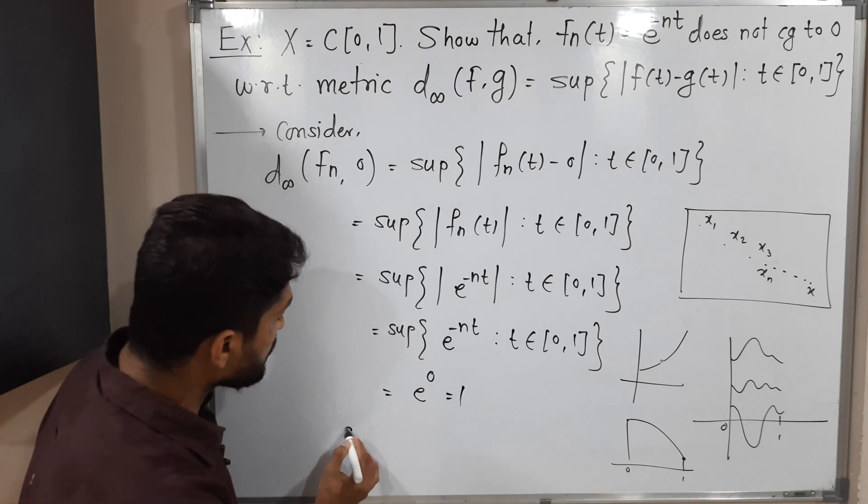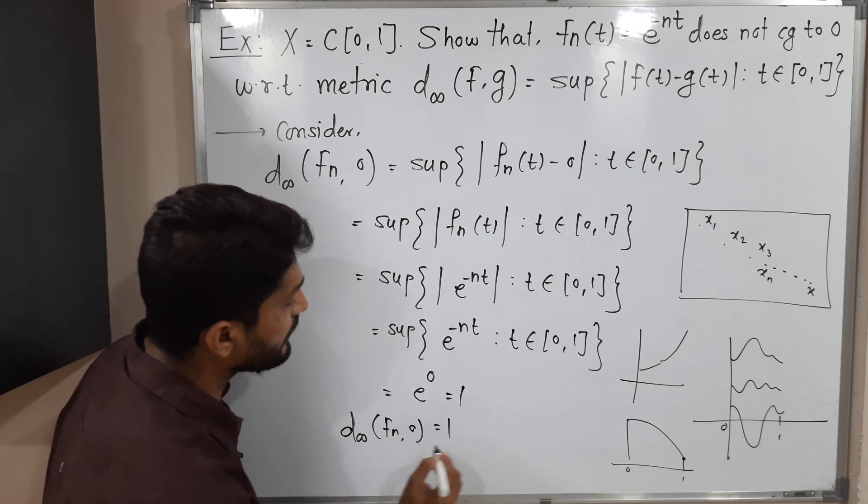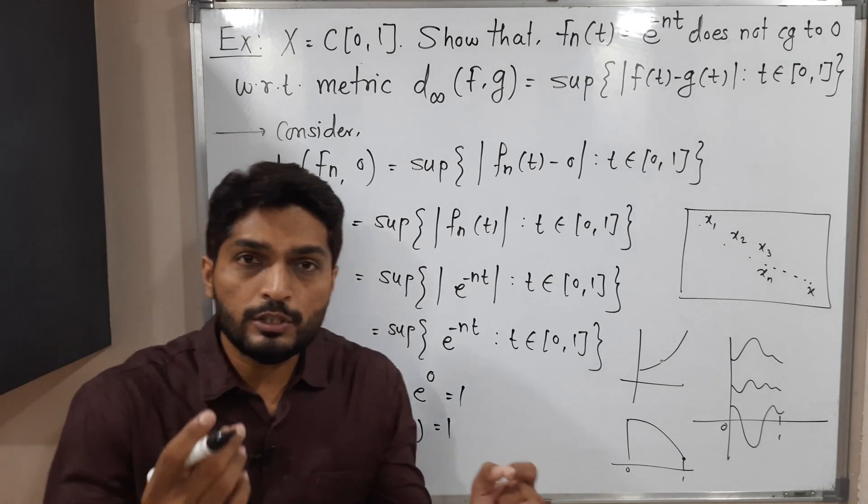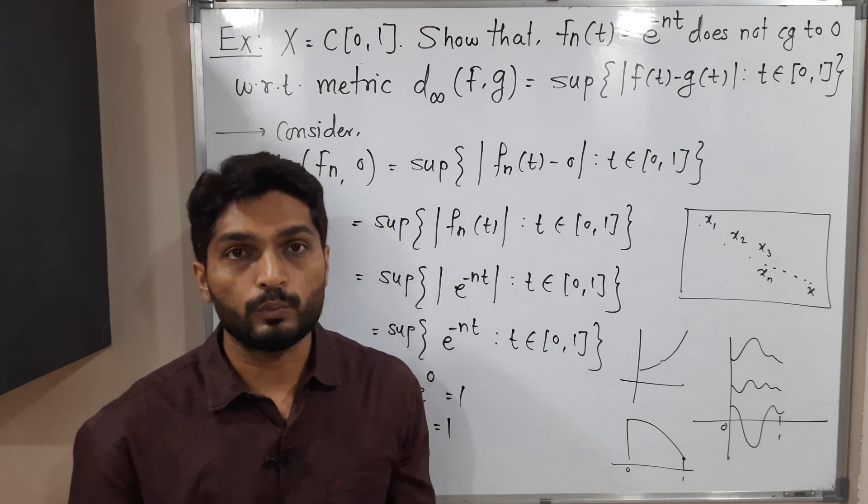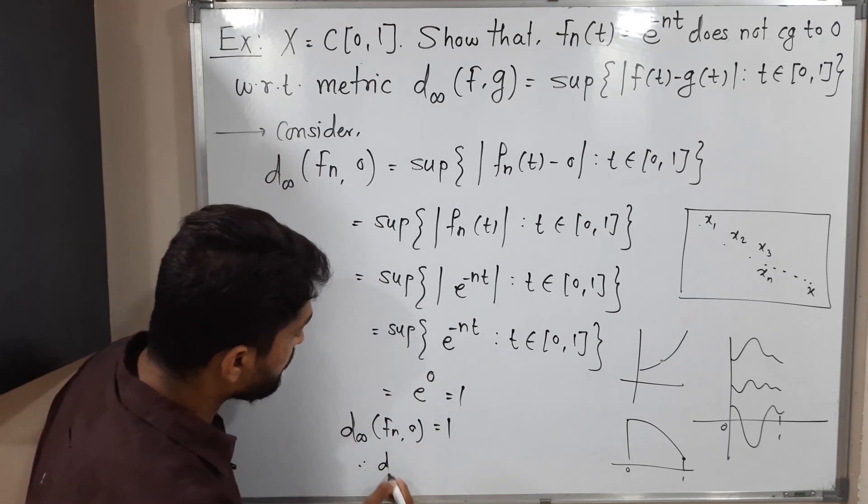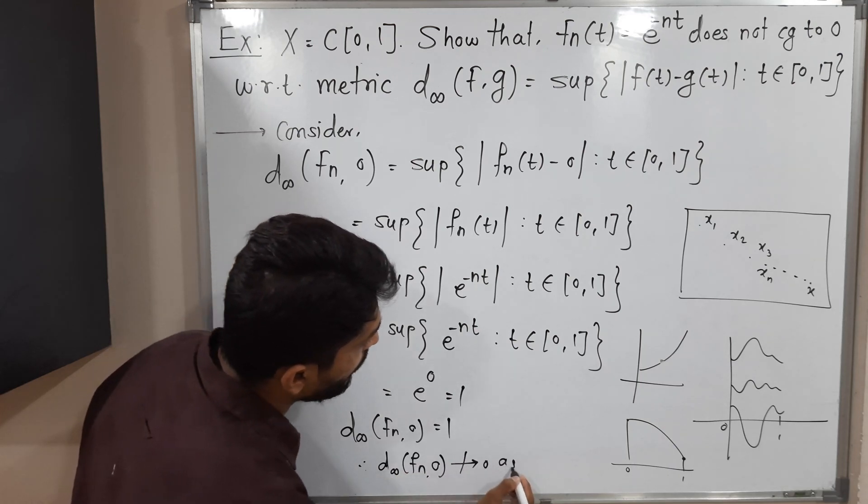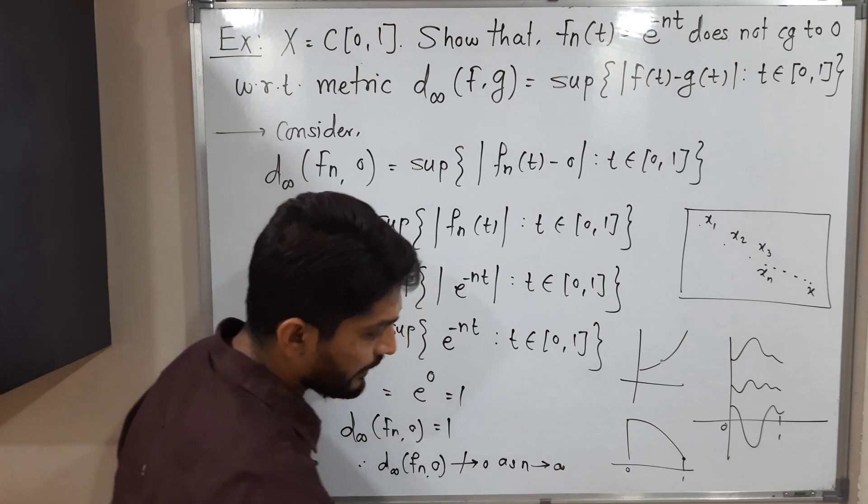So distance between Fn and 0 is fixed, which is 1. So distance is not moving towards 0. That's why D∞(Fn, 0) is not moving towards 0 as n tends to infinity.